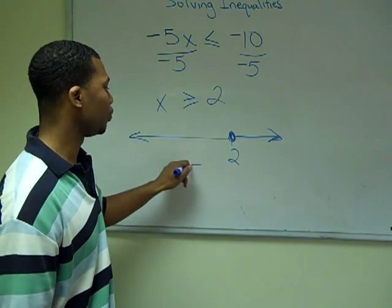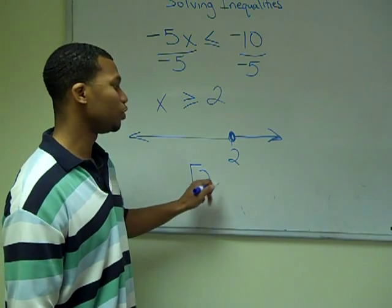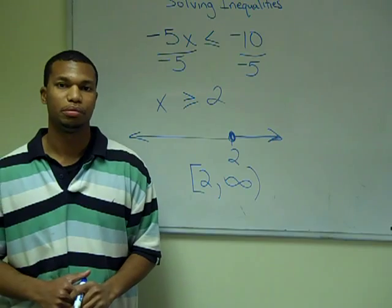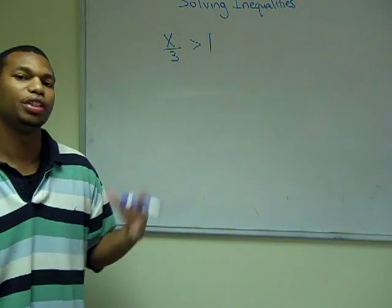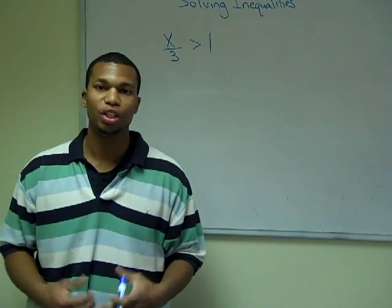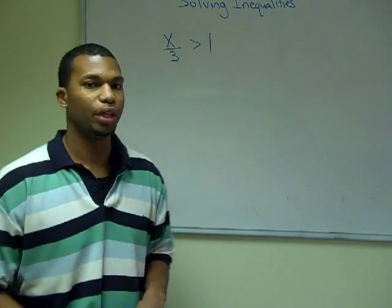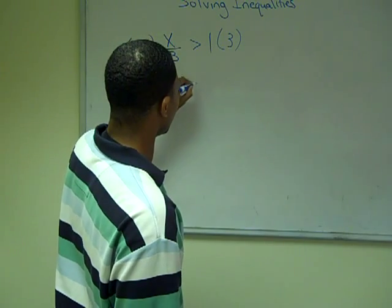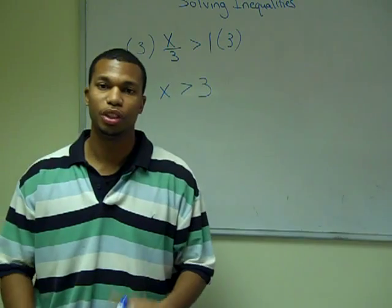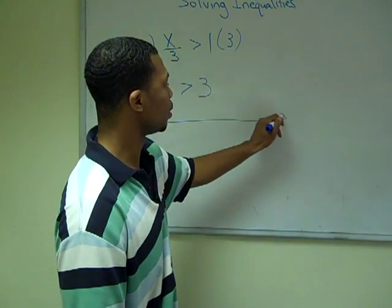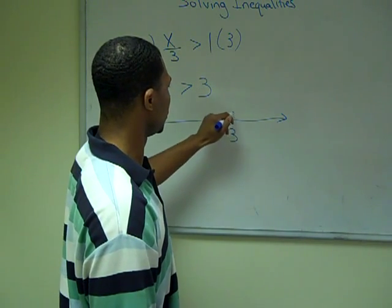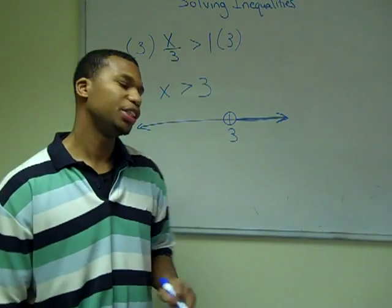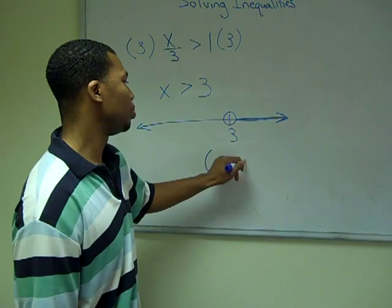So in set notation, instead of a parenthesis we use a bracket, putting our lowest value of 2 and our highest value of positive infinity. In this next example, I have X over 3 is greater than 1. To solve this, I use the multiplication principle and multiply both sides by 3, giving me X is greater than 3. Graphically it's an open dot, and in set notation it goes from 3 to positive infinity with a parenthesis.